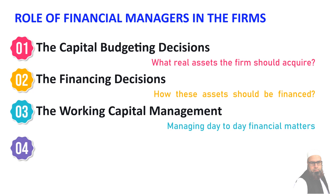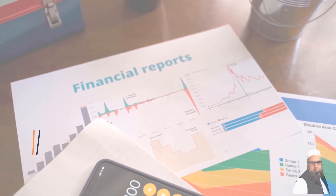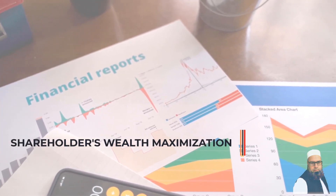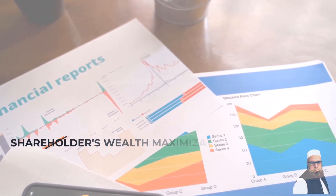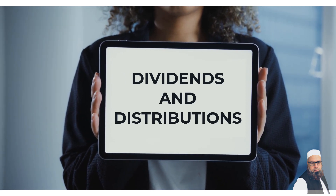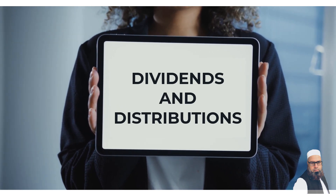A fourth decision may arise when the firm begins to generate profits: should the firm distribute all or a proportion of earned profit in the form of dividends to shareholders, or should it be ploughed back into the business? In taking any course of action, managers should focus on maximizing the wealth of shareholders. In this video, we will mostly talk about this fourth decision — dividends and distributions.